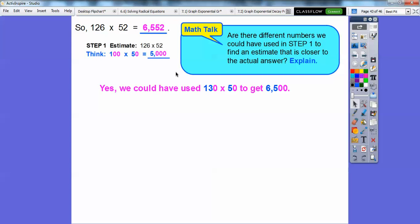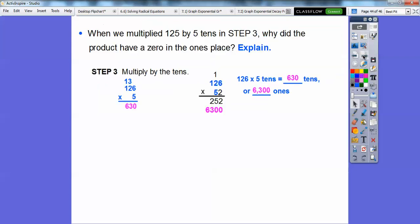We could have used, instead of 126 rounded to 100, we could have rounded it to 130. And then 130 times 50, 13 times 5 is 65, and then add that 0 and that 0. That gets us 6,500. And that's a lot closer to our answer up there of 6,552.